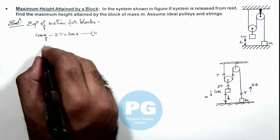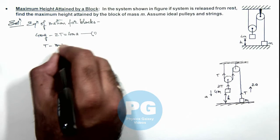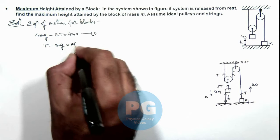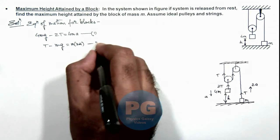And for mass m we can write: t minus mg is equal to m multiplied by 2ay, as its acceleration is 2ay. This is our equation 2.